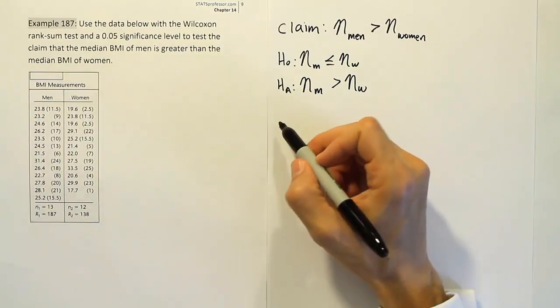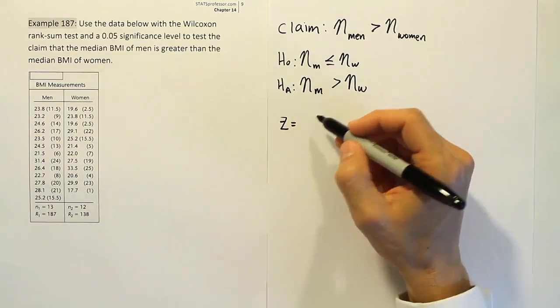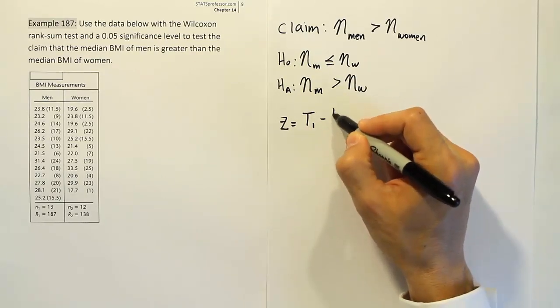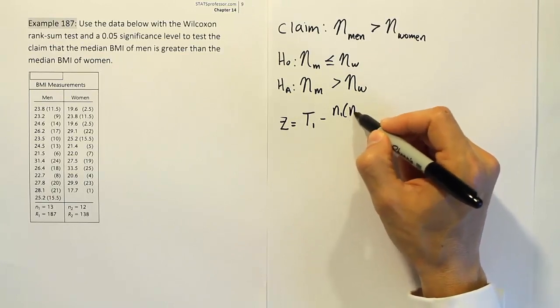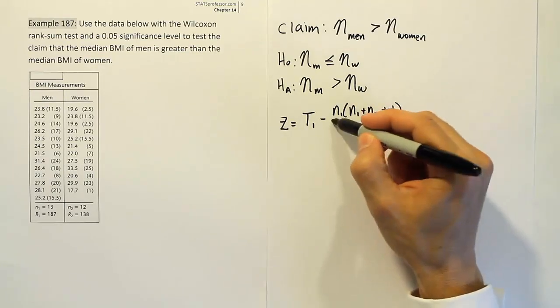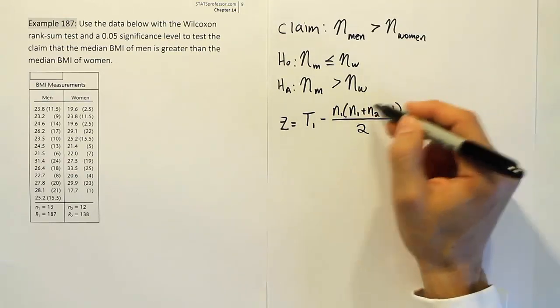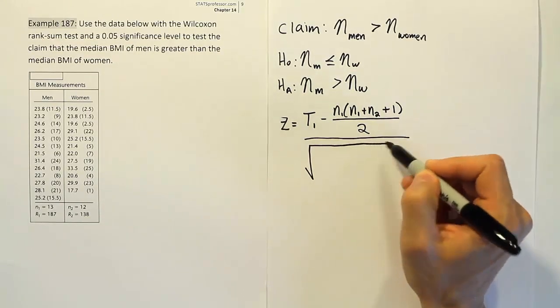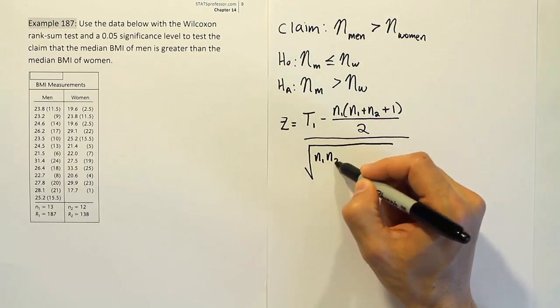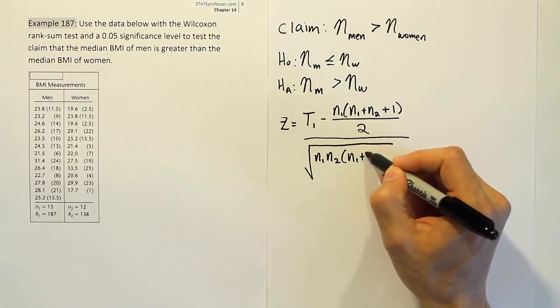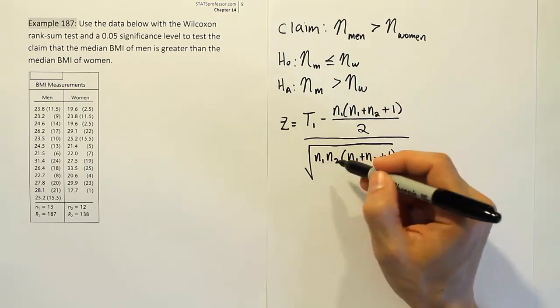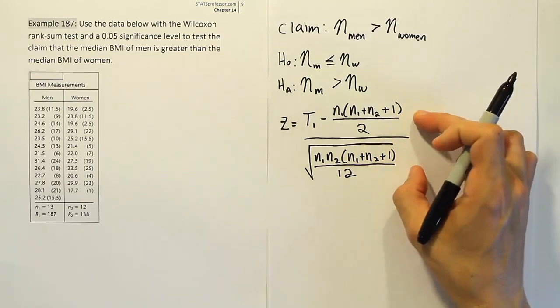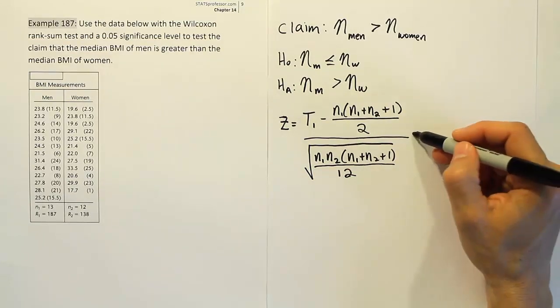And then from there what I want to do here is just work out the test stat formula. So the formula is a little complicated. It's the rank total for the first population or first sample, and then minus is going to have this following expression. So N1 times N1 plus N2 plus 1 divided by 2 and this is going to be the mean for this sum of ranks here. And then we're going to have here on the bottom the square root of N1 N2 parentheses N1 plus N2 plus 1 again all divided by 12. So if you put that all together that would give you a Z test stat or a test stat with a Z distribution.